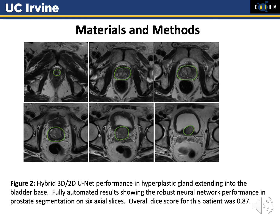Here is a picture of a patient with a Dice score of 0.87. We are seeing six axial slices, where the green highlighting indicates the prostate that was automatically detected with the hybrid 3D-2D U-Net.